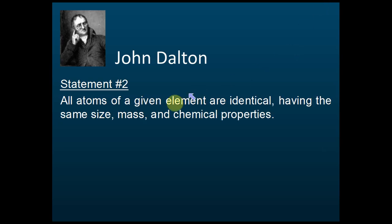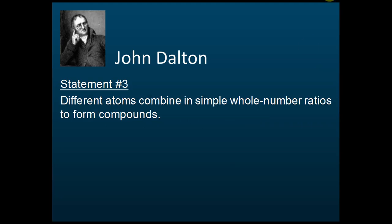All atoms of a given element are identical, meaning they are the same. For example, all atoms of iron are the same — they have the same size, same mass, and same chemical properties. John Dalton also says that different atoms can combine together to form something called compounds.